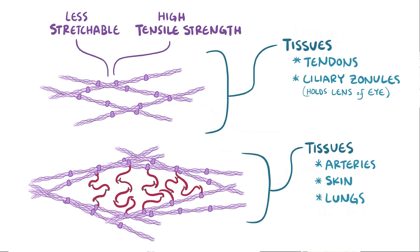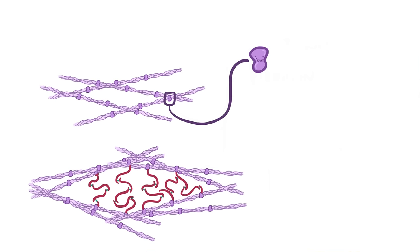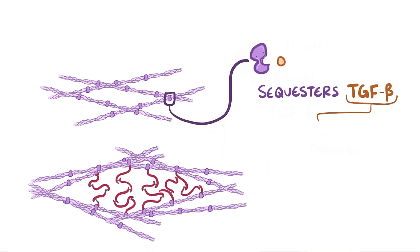In addition to being part of microfibrils, fibrillin also regulates tissue growth. Fibrillin sequesters or removes transforming growth factor beta, or TGF-beta, which stimulates tissue growth. So fibrillin therefore lowers how much TGF-beta is available to stimulate growth.